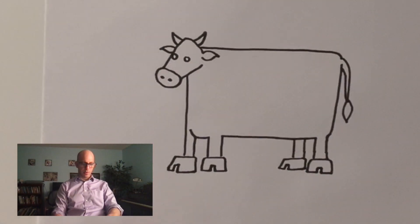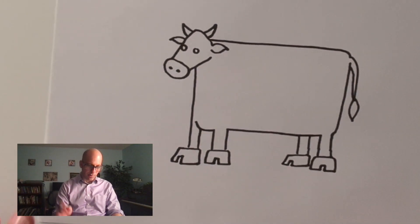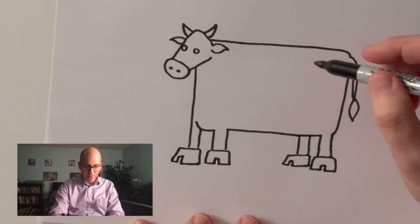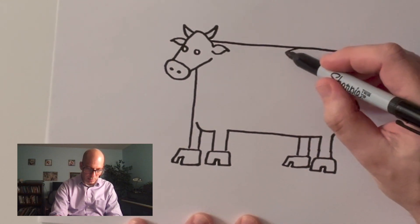All right, this one's a little bit lower than the others, so that kind of makes it look like it's taking a step forward. Now something that's really important about the cow is its spots, right? So I like to make kind of just these blobs.